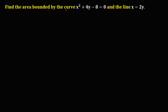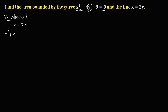From the equation of the curve, we have x squared plus 4y. Since this one is y, we're going to solve first the y-intercept. To solve for the y-intercept, we let x equal to 0. So we have 0 squared plus 4y minus 8 equals 0. Then to solve for y, we have 4y equals 8, and dividing both sides by 4, y is equal to positive 2.